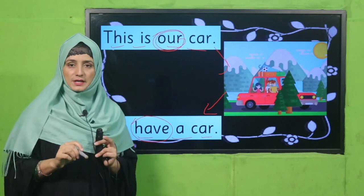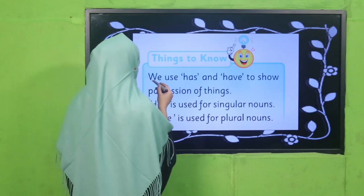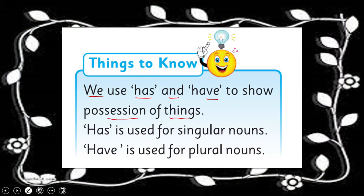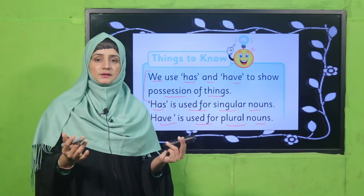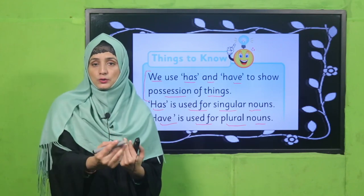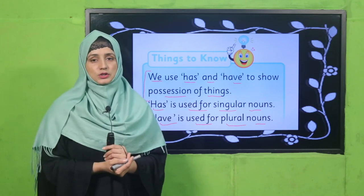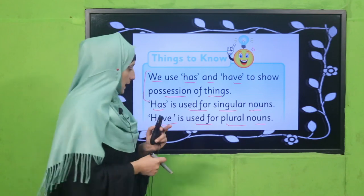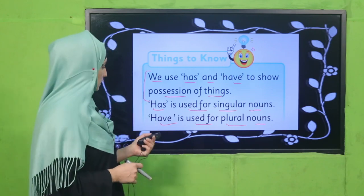Now let's see how we can use 'has' and 'have.' We use 'has' and 'have' to show possession of things — anything that belongs to us or belongs to you. 'Has' is used for singular nouns, and 'have' is used for plural nouns. So 'has' is used for singular naming words and 'have' is used for plural naming words.